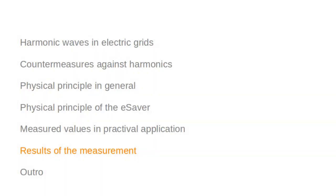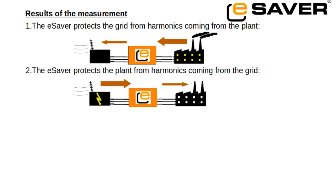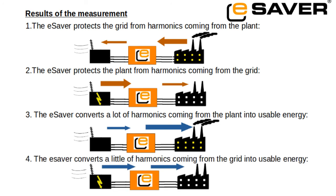What do we learn from this measurement? We first saw that the eSaver protects the transmission network from the harmonics. But the protection against harmonics works in both directions. Your installations are protected from the harmonics from the grid with the eSaver. That's what we saw second. Next we looked at the usable energy. We have seen that the harmonics that arise in the plant itself are converted back into useful energy by the eSaver. And lastly we have seen that the harmonics from the grid are converted less into useful energy than the harmonics from the plant.